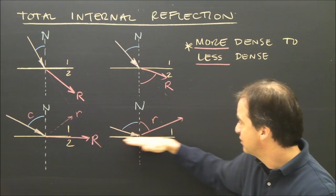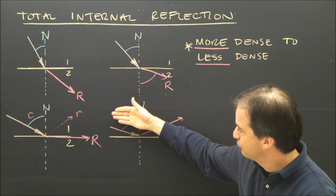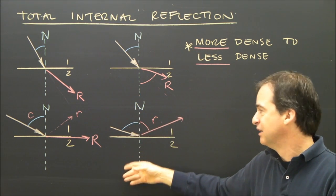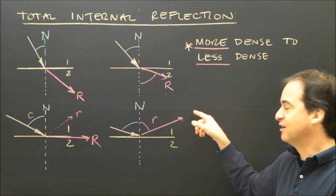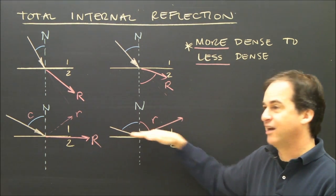That means this surface here, instead of the light traveling from diamond to air, it's stuck inside the diamond. It's reflected inside the diamond. This is acting like a mirror.